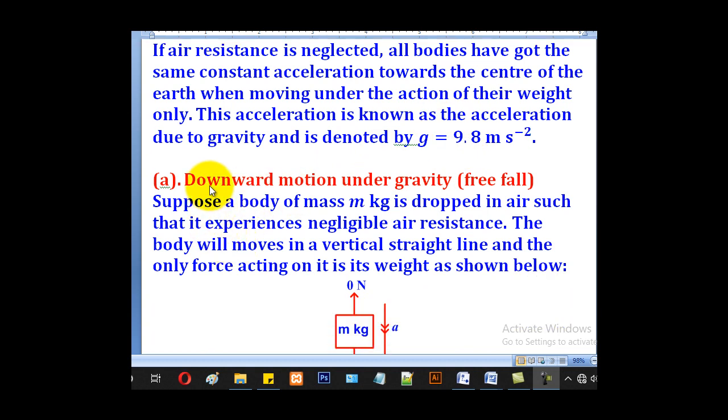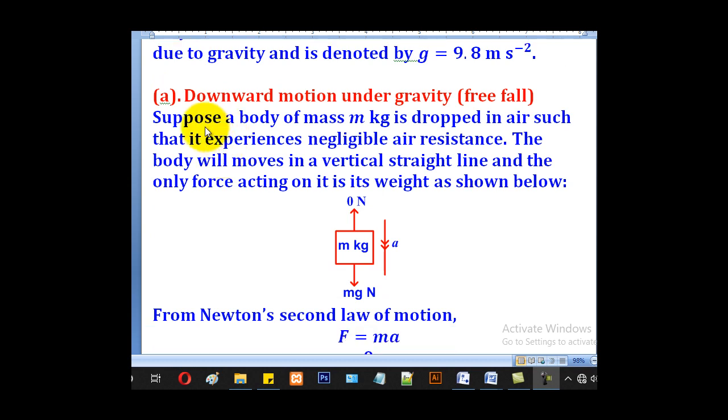We shall start with downward motion and also upward motion. Downward motion can also be called free fall. Suppose the body of mass m kilograms is dropped in air such that it experiences negligible air resistance. The body will move in a vertical straight line and the only force acting on it is its weight as shown below. So this is the body, mass is m kilograms, so its weight will be mg in newtons. There is no other force acting, so the upward force will be 0. The acceleration will be downwards because it is freely falling.